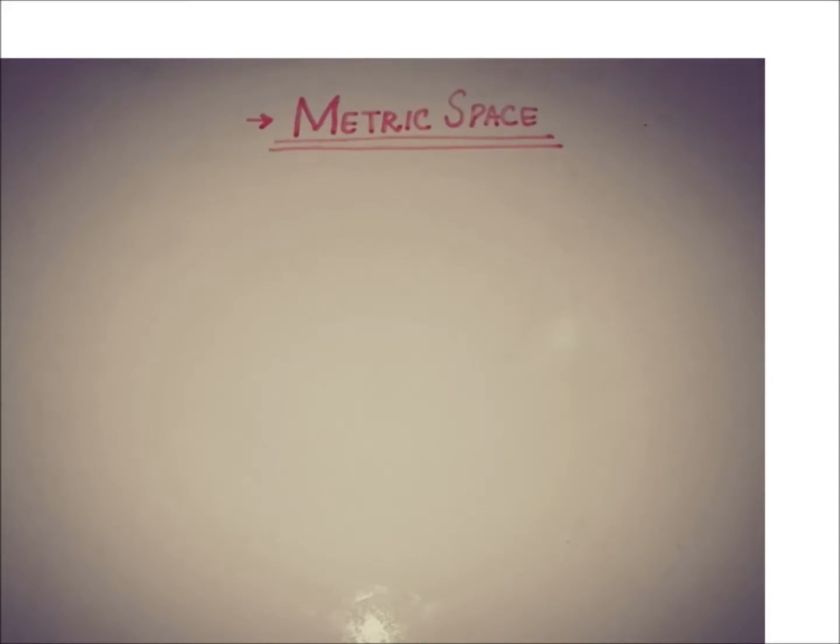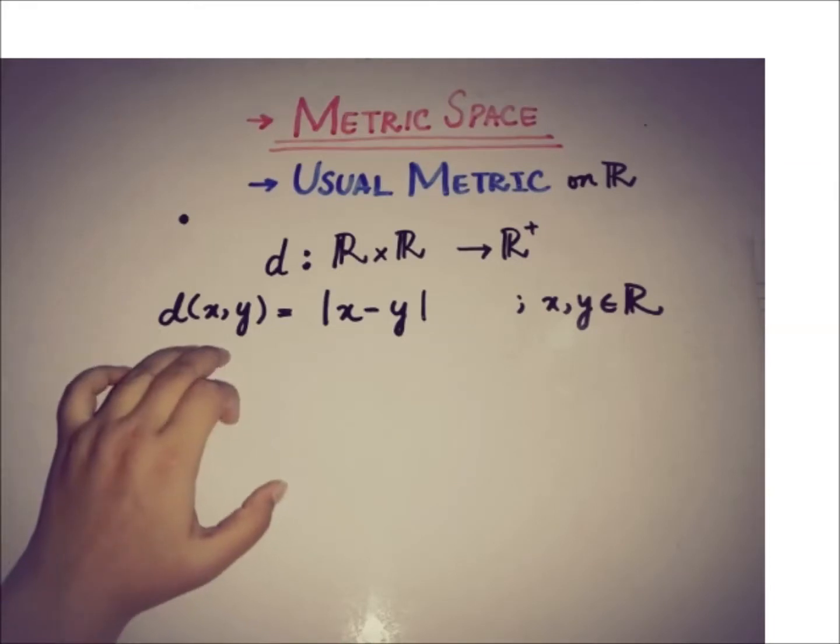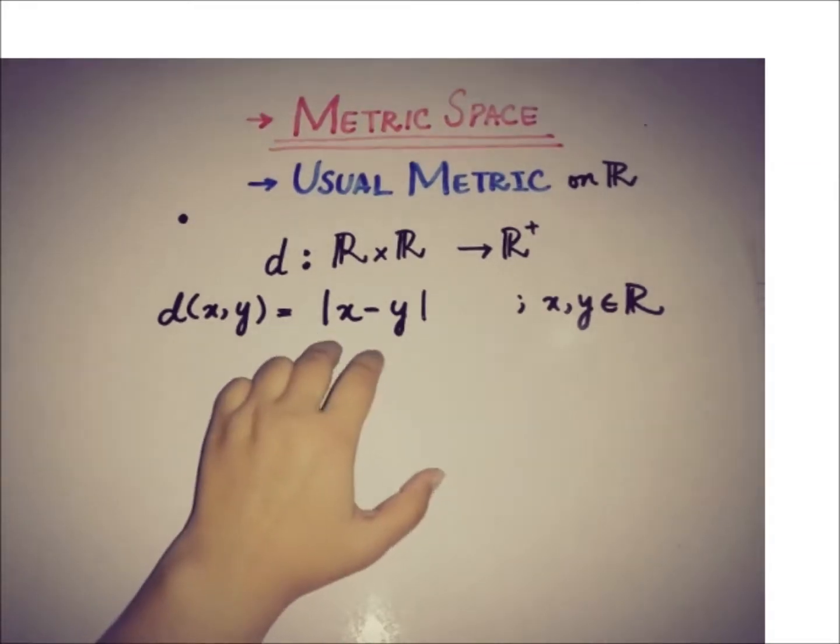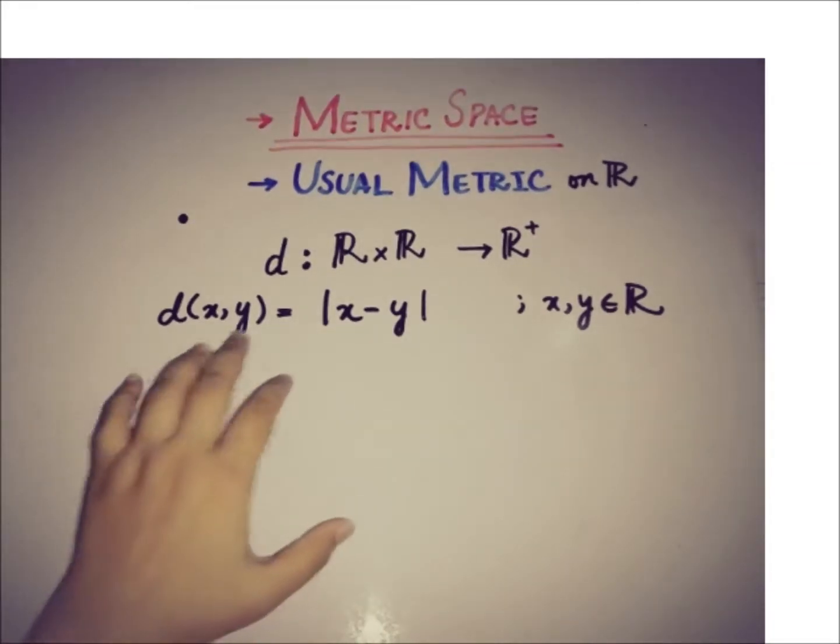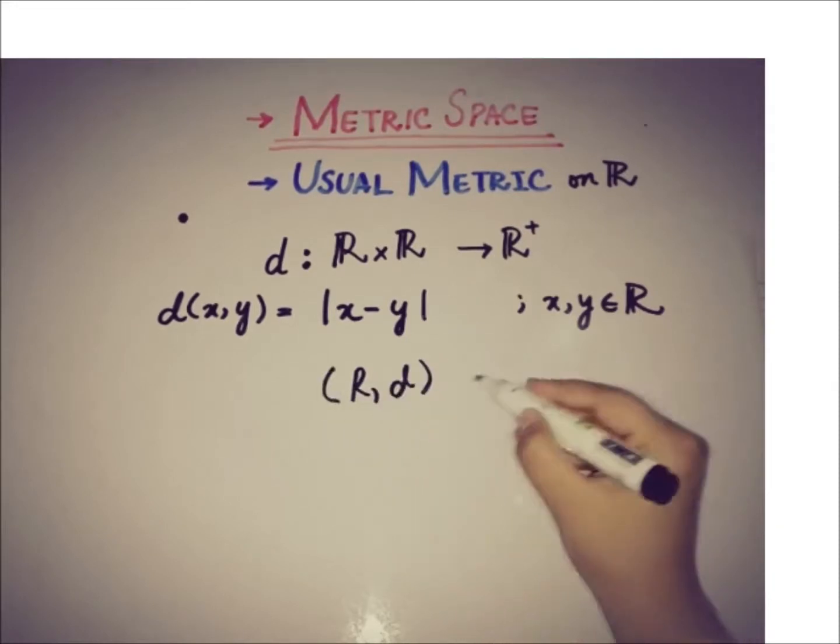So the very first example that we are going to talk about is usual metric on ℝ. We know that ℝ is a set of the real numbers and we have a metric d from ℝ cross ℝ to ℝ⁺ where d is defined when we take two elements from ℝ. Then the absolute value of x minus y is the metric that I've defined for ℝ. Now here ℝ and d is the metric space.